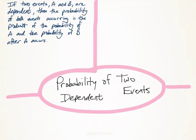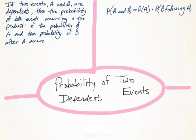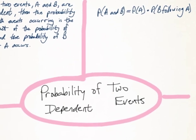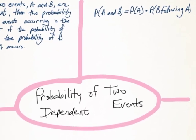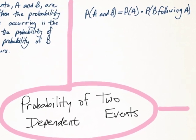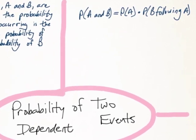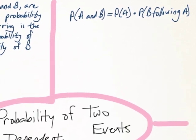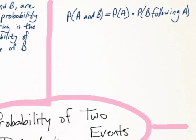Moving on to the probability of two dependent events — the first event will have an impact on the second event. So the first event will be the independent event, while the second one will be dependent. To solve this, we take the probability of the first event and multiply it by the probability of the second event.